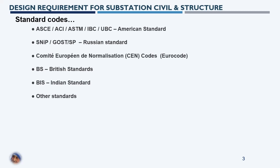For Russian standards, we have SNiP, which covers loads and load combinations. GOST is the material standard for concrete, steel, aluminium, copper, and other materials. SP is mainly for design standards covering design requirements for various types of structures such as buildings, gantry structures, and equipment structures.